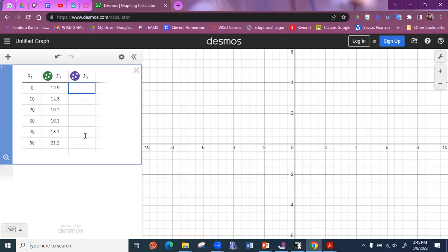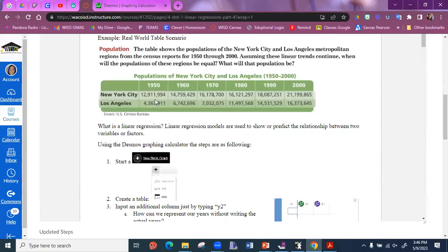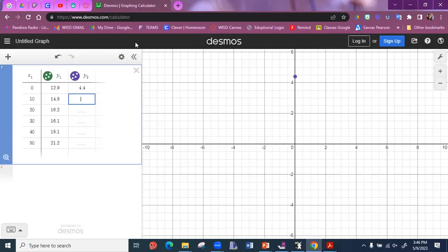What are our Los Angeles? LA? 4.4. This is 4,367,911. This one is 6,742. So 6.7 million. And then we had 7.7 million. 7.0 million. Then 11.5, 14.5, 16.4. Okay. Are there any questions or anyone who needs help in putting their information into the Desmos table? Do we all see where the numbers are coming from?